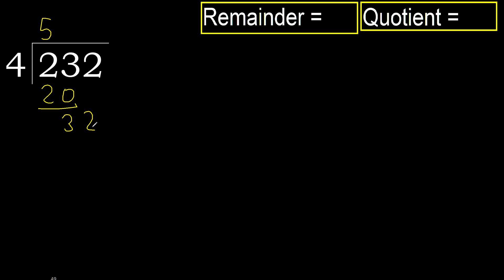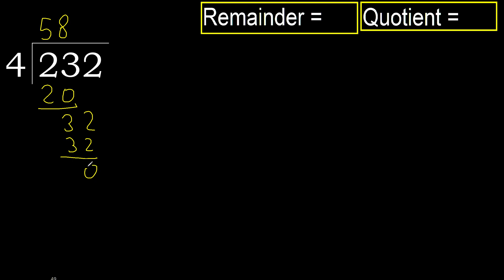32. 4 multiplied by 9 is greater. Multiply by 8 — ok, that is not greater. Subtract: 0. Next.